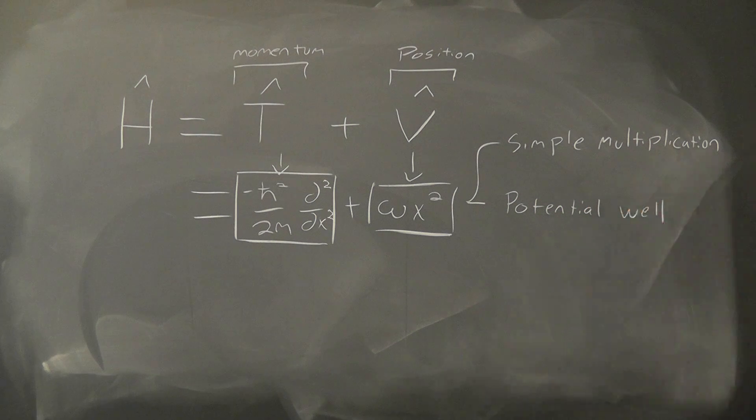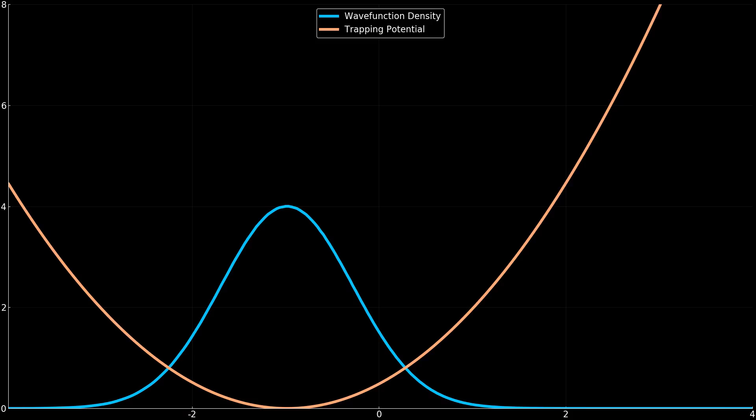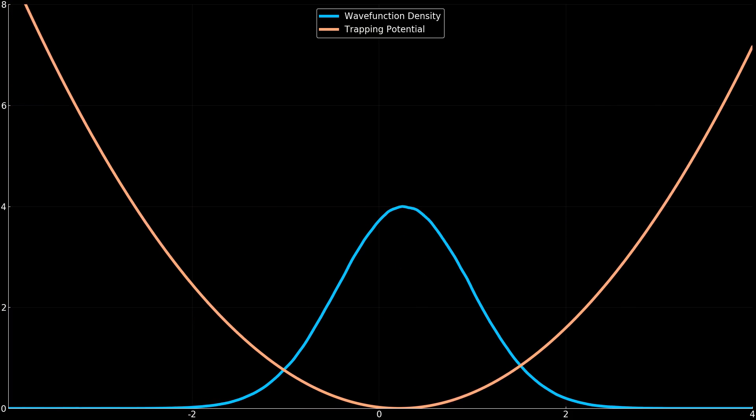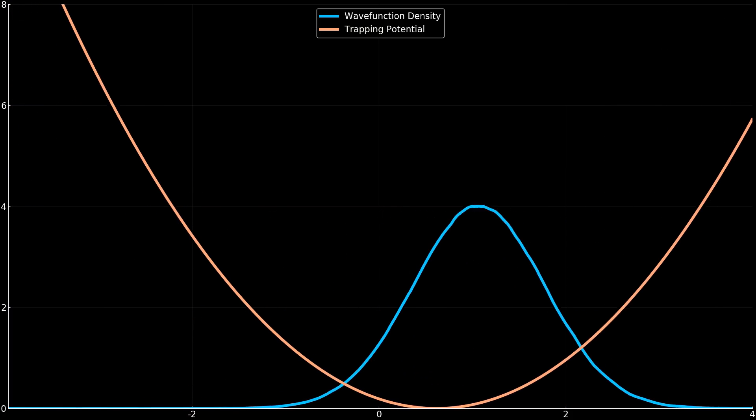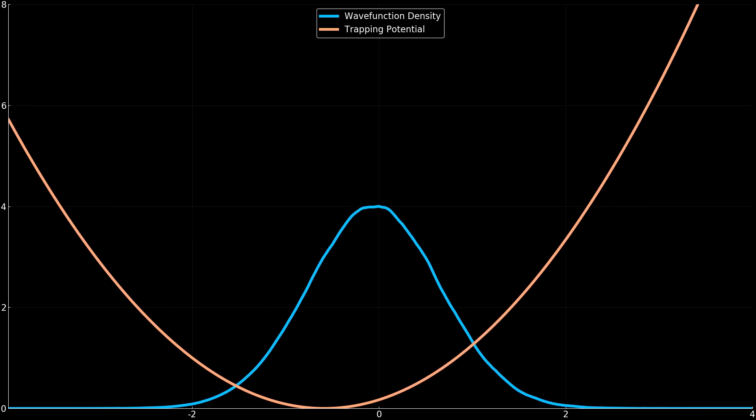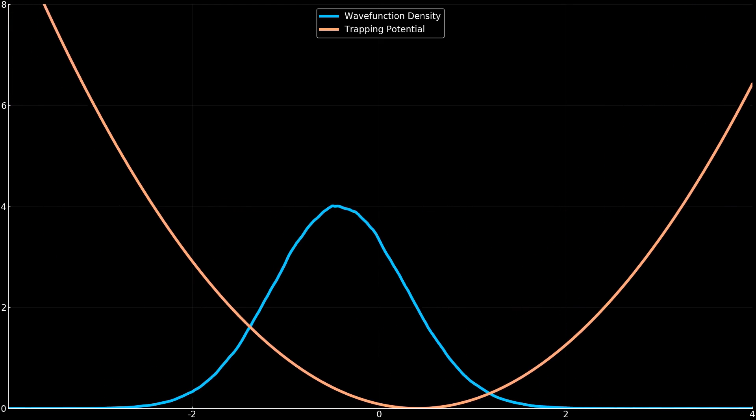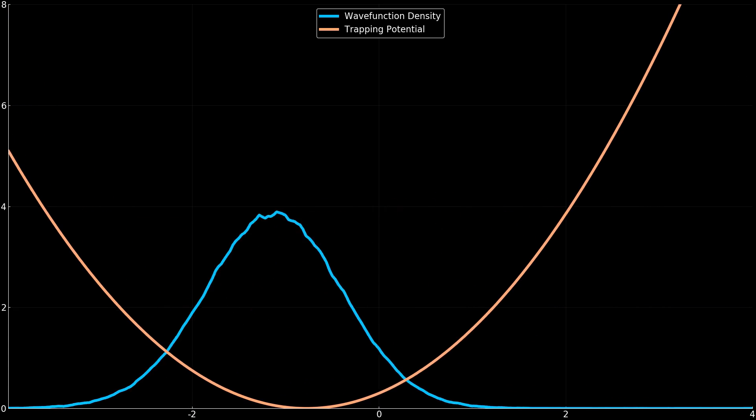For example, if our potential is simply x squared and looks like this, our quantum particles want to sit at the bottom of this well. If we move the trap, the particles move with it. Now, as a note, the wave function density is really wiggly in this simulation, and it's interesting to think about exactly why that is the case. But that might be the story for another day entirely.